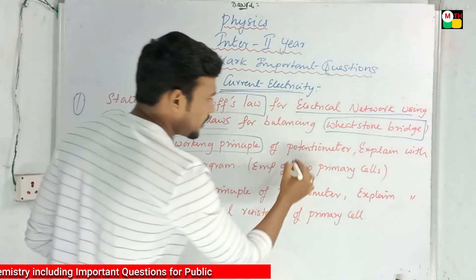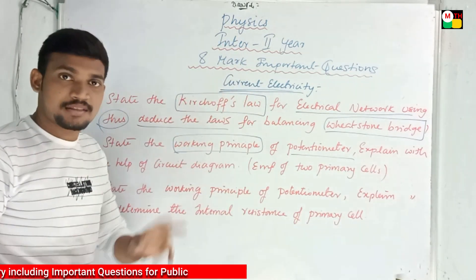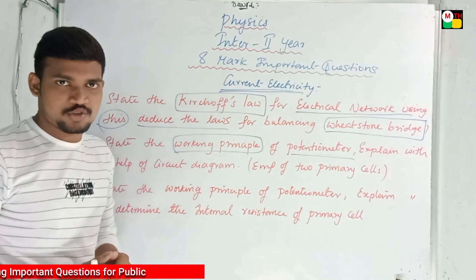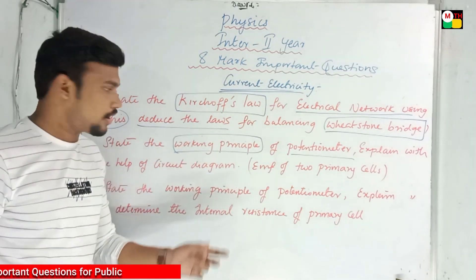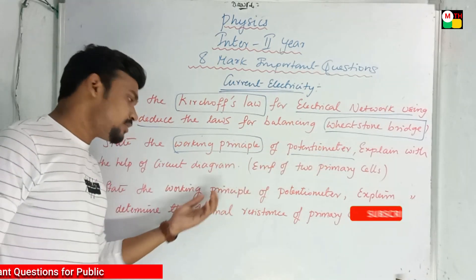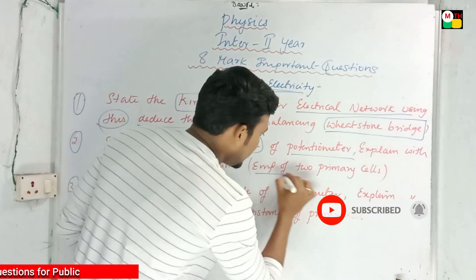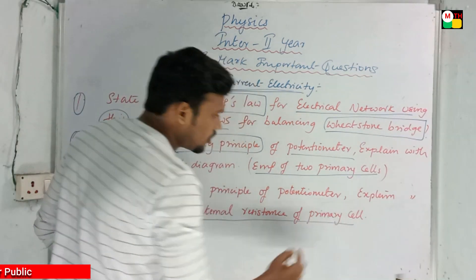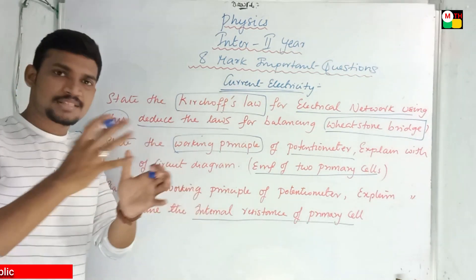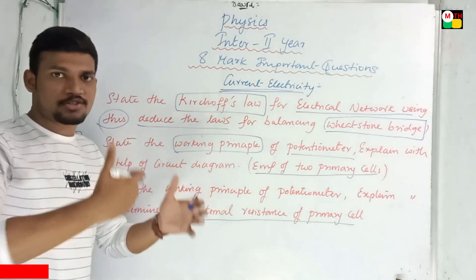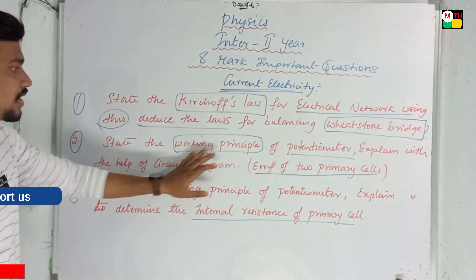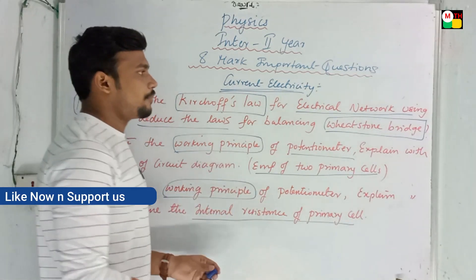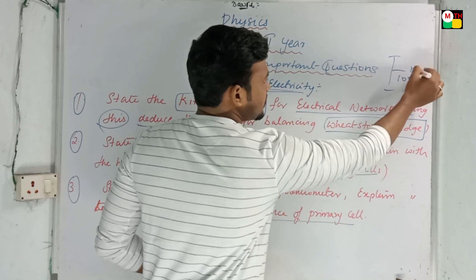The second question is the working principle of the potentiometer. You can choose two important questions from this chapter. Similar to the open pipe chapter, here also we have two similar questions: one is the principle of the potentiometer, and the other is also the principle of the potentiometer but with a difference — the comparison of EMF of two primary cells and internal resistance. These two questions are about 50% the same but differ in application.